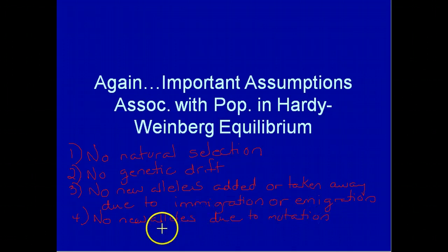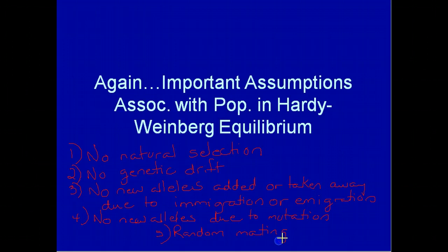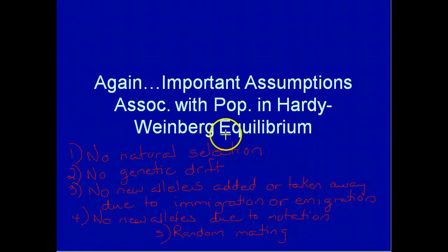And finally, the last assumption is that mating is completely random — in other words, individuals don't choose to mate based upon a particular phenotype or genotype. These are the assumptions that have to be in effect for a population to stay in Hardy-Weinberg equilibrium.